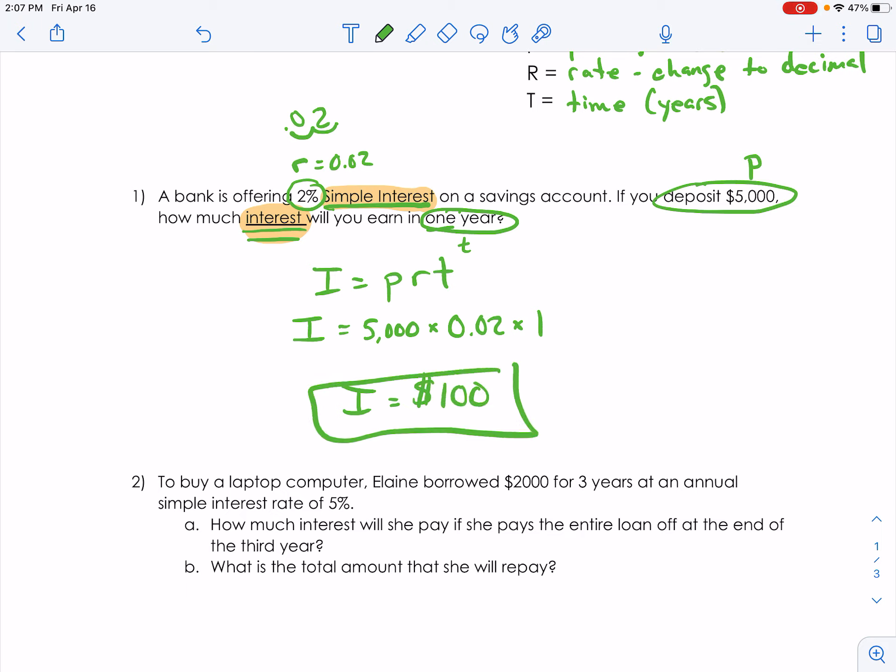So 5,000 times 0.02 is 100, and 100 times 1, the interest we would earn in one year is $100.